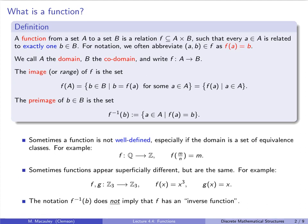The notation F⁻¹(b) does not imply that F has an inverse function. Because of that, we don't say F inverse — we usually just say the preimage of b and write it like this.